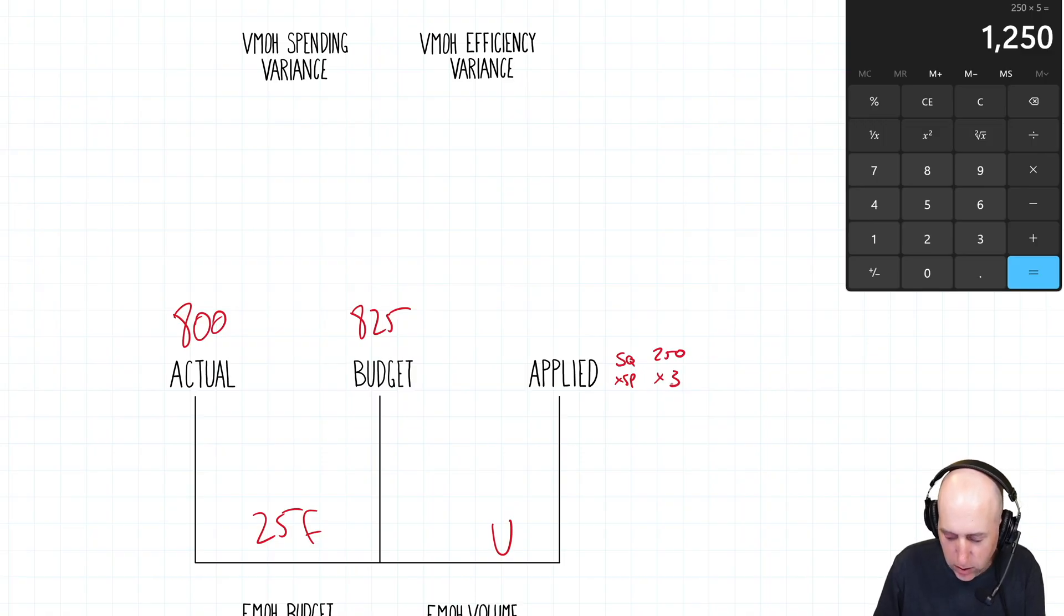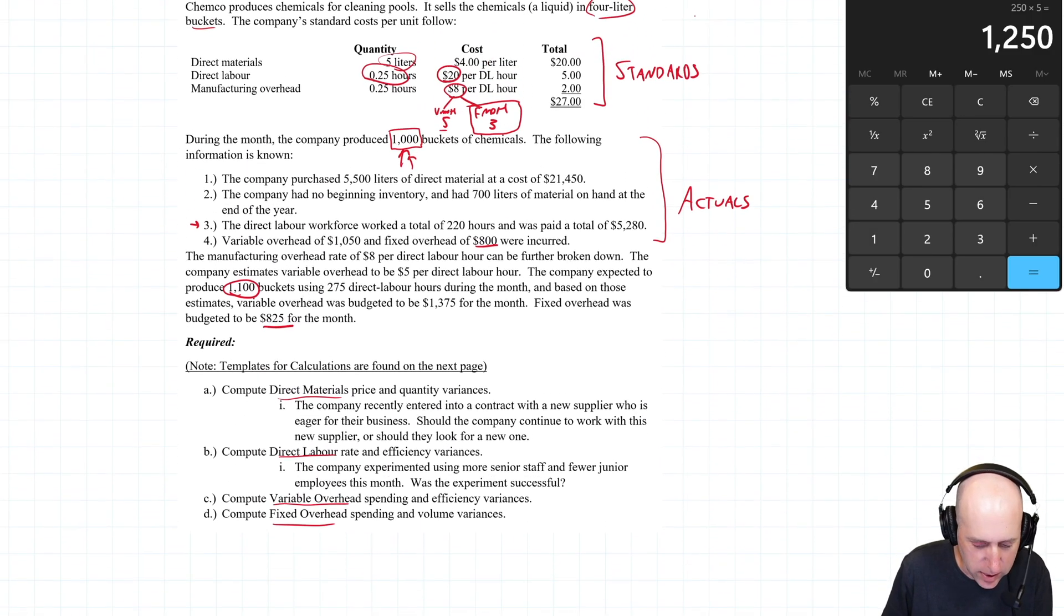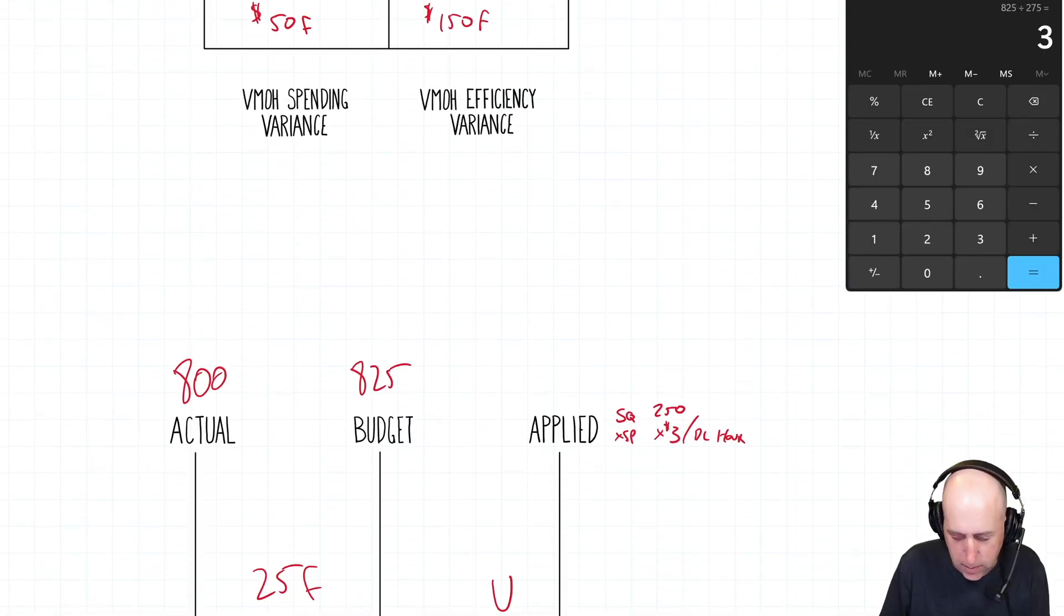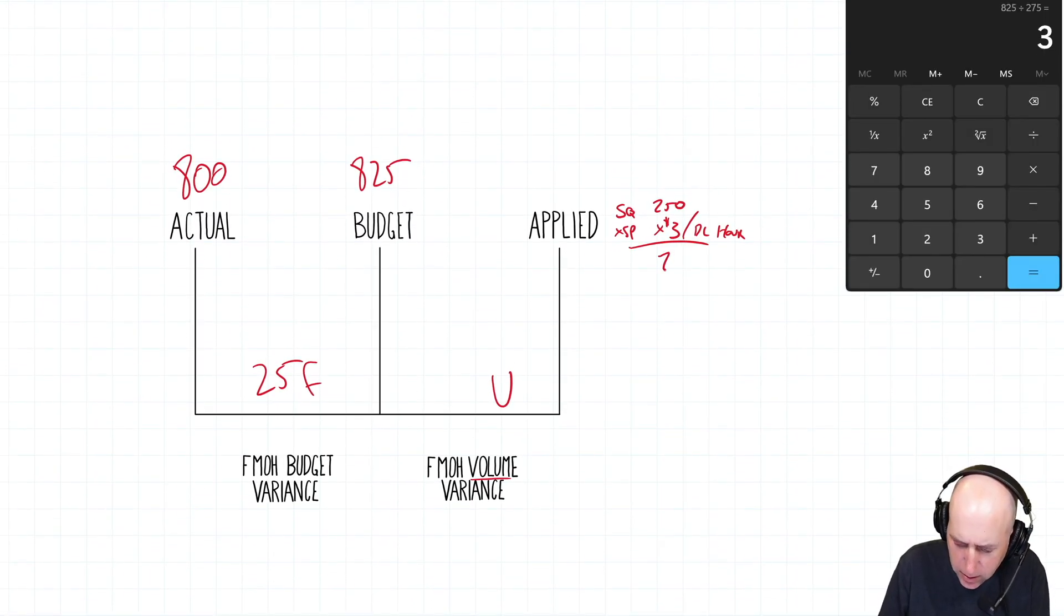SP, we said, is $3 an hour. And just to kind of go over that, there's a few ways you could calculate it here. I think the simplest way is they say the manufacturing overhead rate of $8 an hour can be further broken down, variable is 5, therefore fixed has got to be 3, as we said. Another way to look at it, though, is they said fixed overhead, we budget to be $825, and that's if we use 275 hours. So 825 divided by 275 means $3 an hour. So I've calculated a couple different ways, we come to 3. So 250 times 3, 750. Compared to 825, we're off by $75. And indeed, it is unfavorable.